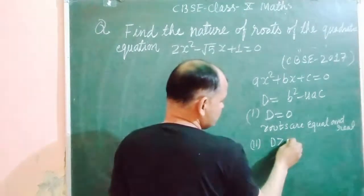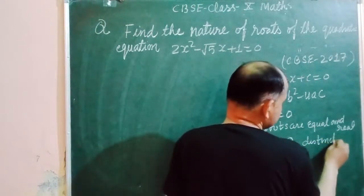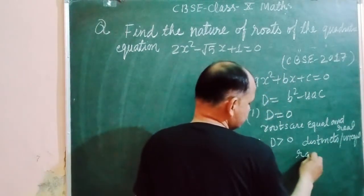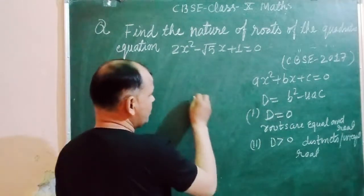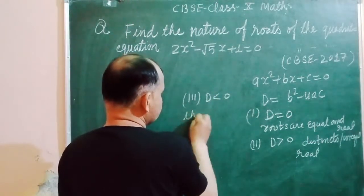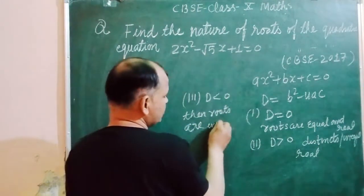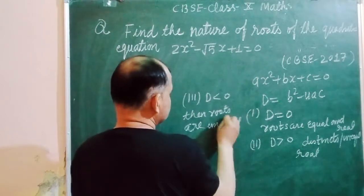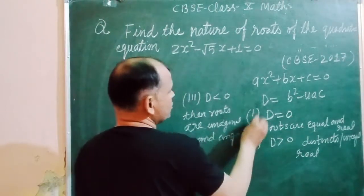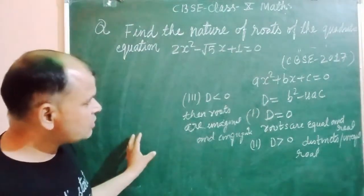Second, if D is greater than 0 then roots are distinct or unequal and real. Third point is, if D is less than 0 then roots are imaginary and conjugate to each other. So these are three conditions in which we can find the nature of the roots.